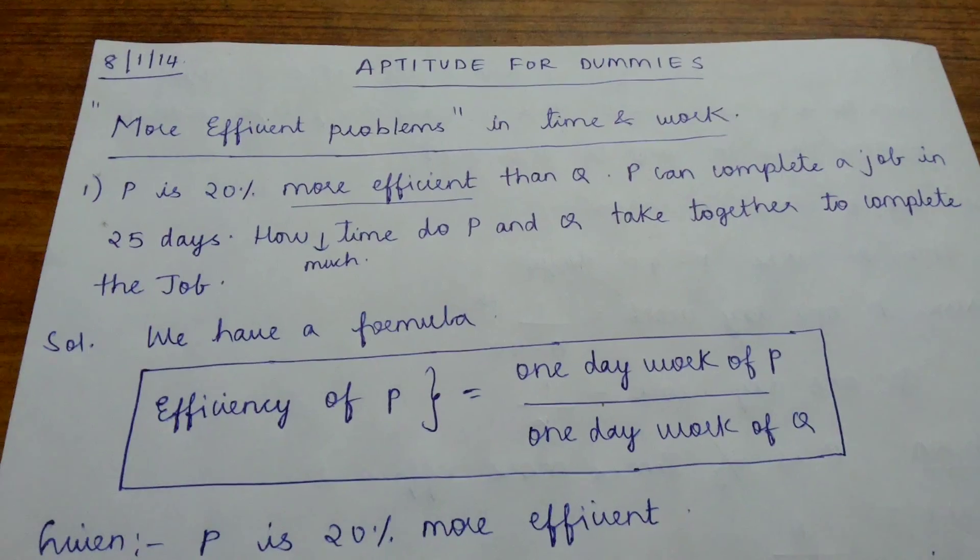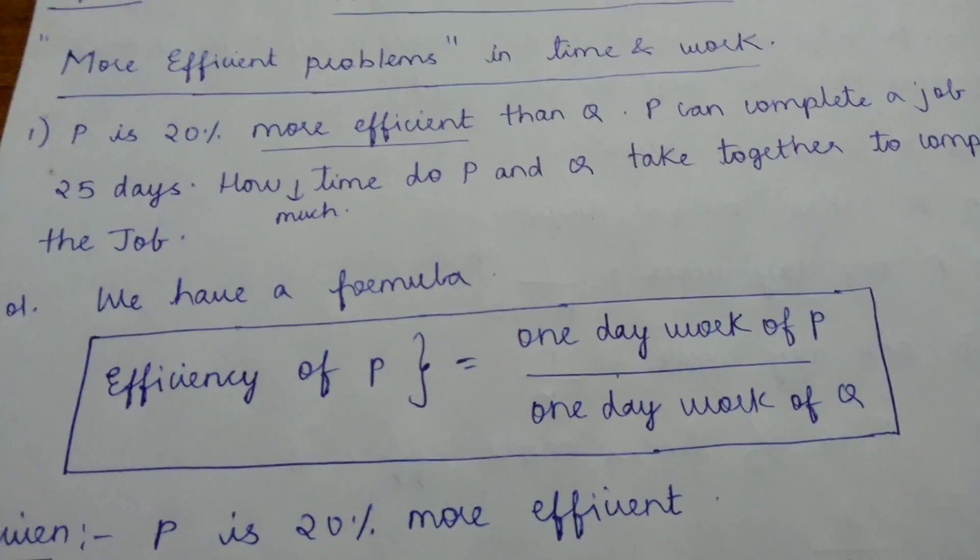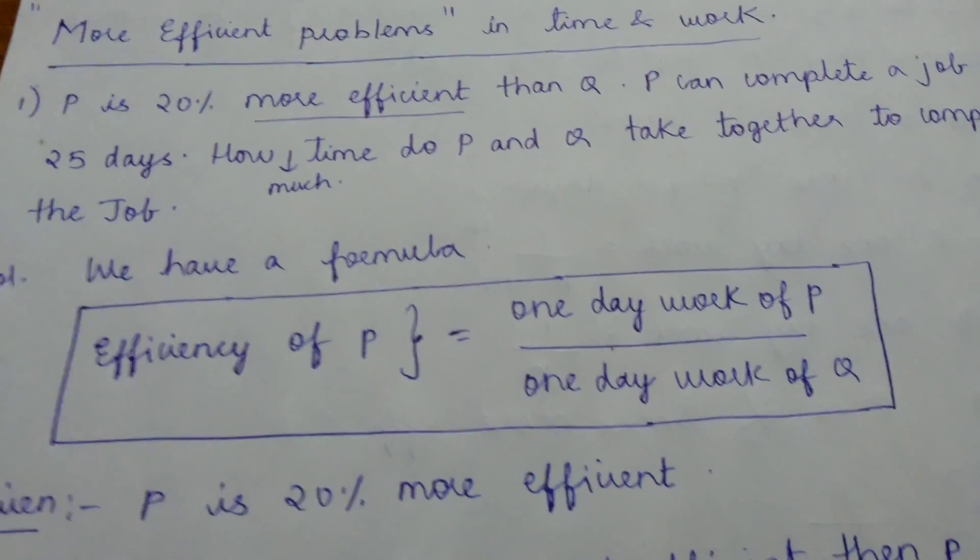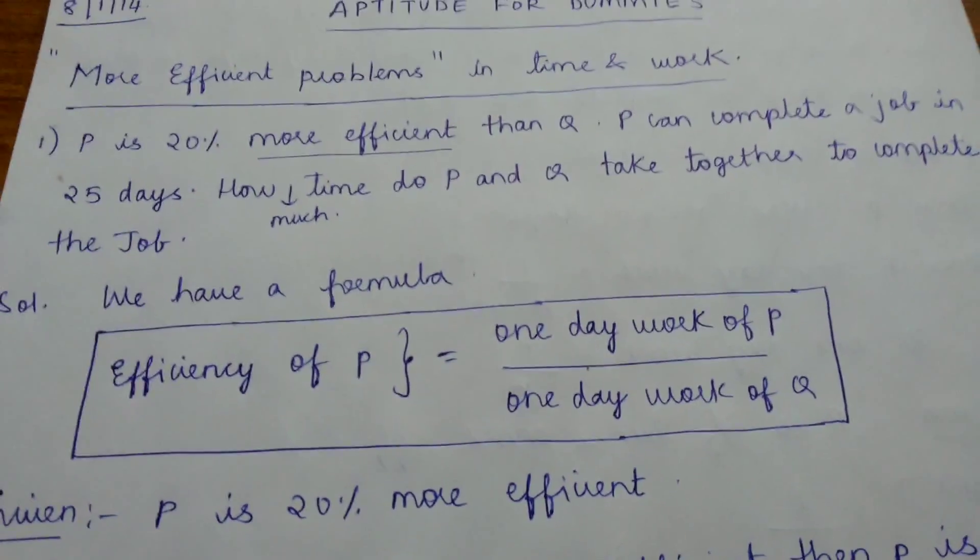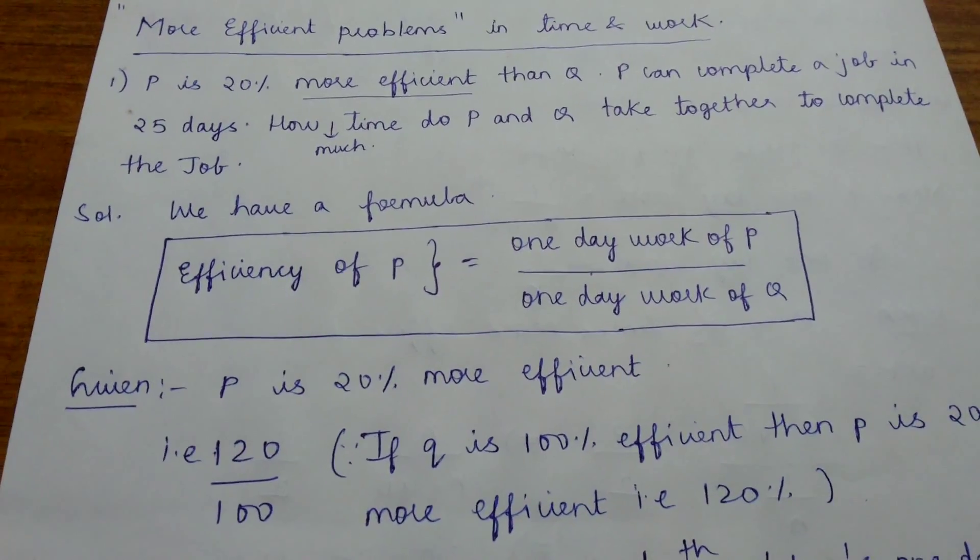For efficiency, we have a formula: efficiency of P equals one day work of P divided by one day work of Q. In the question, he has given that P is 20% more efficient.